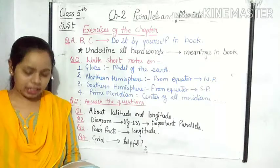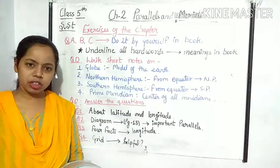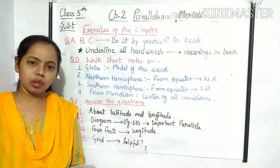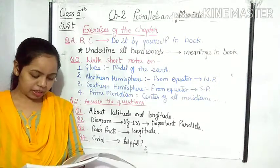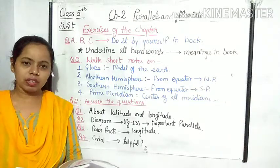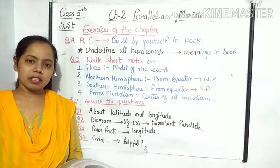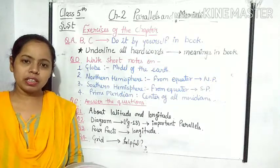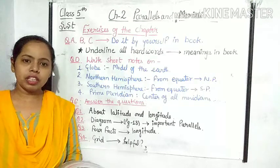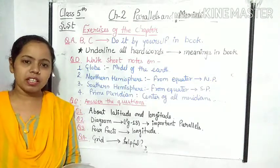Exercise number A is multiple choice questions. Here we have only two questions. You all have to read the question and tick the correct option. Exercise number B is fill in the blanks and exercise C is match the following. You all have to do these exercises in your book — there is no need to do these exercises in your copy.